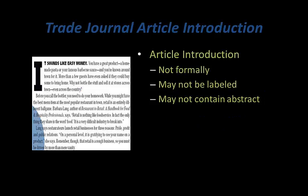A trade journal article will have an introduction at the beginning of the article, but it won't be as formal as a scholarly journal article and it may not be labeled as an introduction. You may also not see an abstract at the beginning of the article.